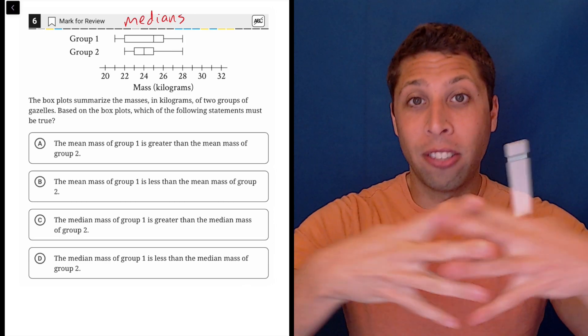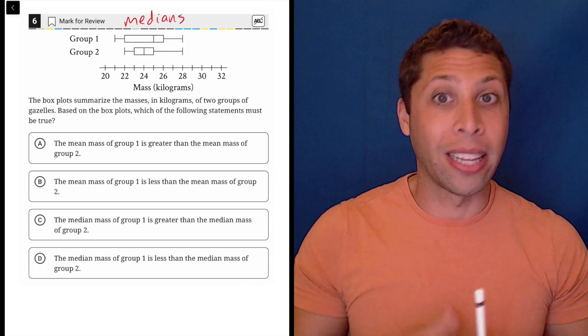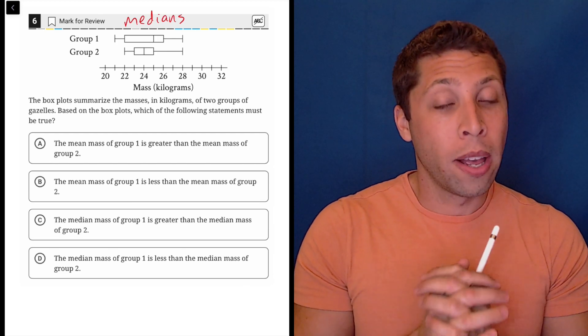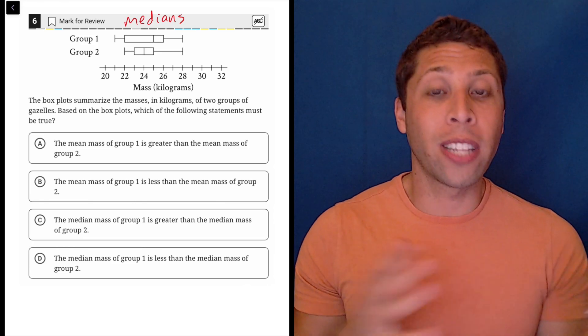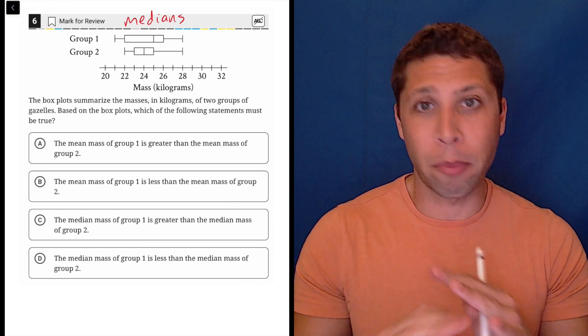A box plot really has to do with the median of a data set. That's the middle number. So that's not the mean - the mean is the average. That's something different and they don't appear in box plots.